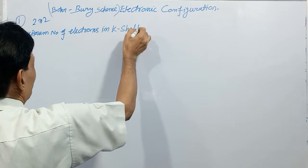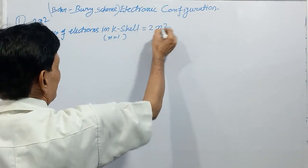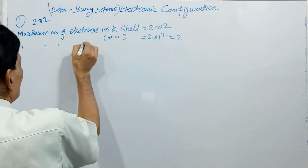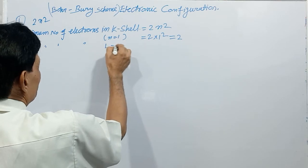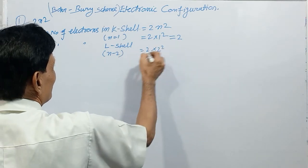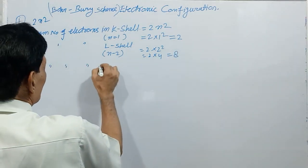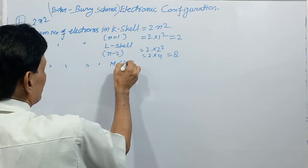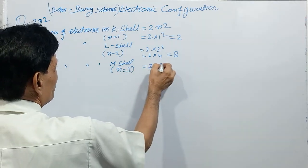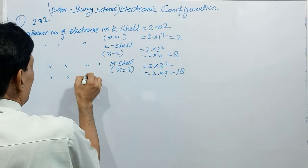In the K shell, n = 1, so maximum electrons = 2 × 1² = 2. The maximum number of electrons in the L shell: L means n = 2, so 2 × 2² = 2 × 4 = 8 electrons. The maximum number of electrons in the M shell: n = 3, so 2 × 3² = 2 × 9 = 18 electrons.